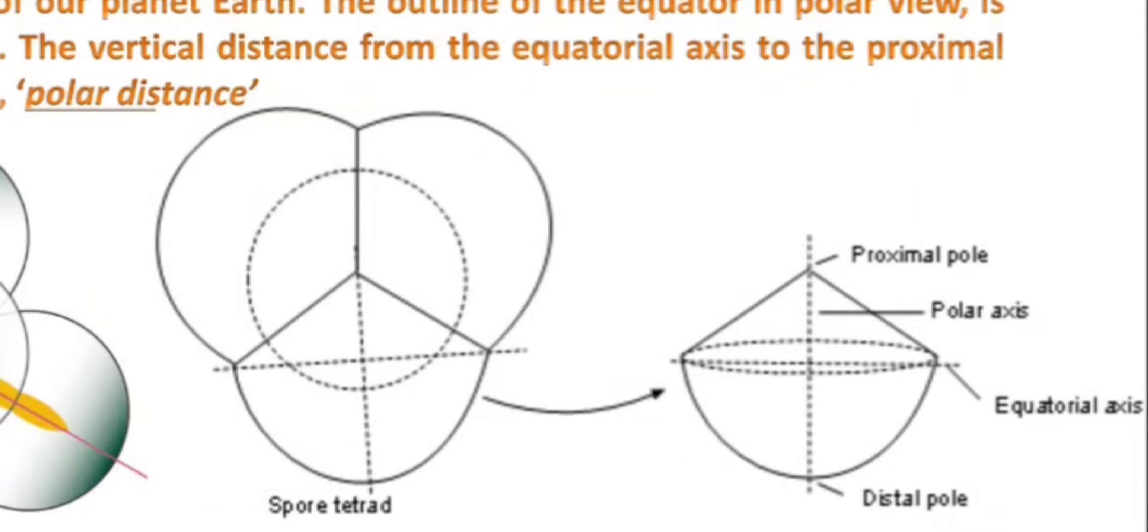So if the poles are there, there will be equator also. When you are viewing the polar axis longitudinally, the axis that is cutting at perpendicular in the middle of the spore is the equatorial axis. There will be circumference of the equatorial zone.